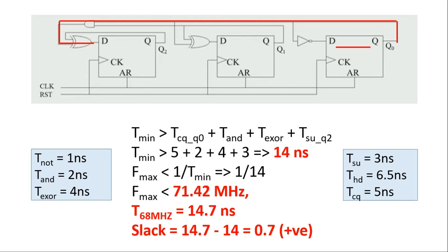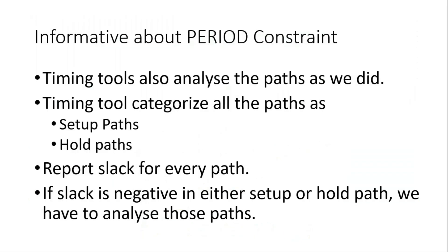The path at the top of the setup path list is the critical path for setup time violation checks, and the path at the top of the hold path list is the critical path for hold time violation checks. All paths are ordered by their importance for each type of check. The timing tool finds the critical paths, places them at the top of each list, and reports slack for every path. If slack is negative in either setup or hold paths, those paths must be analyzed.